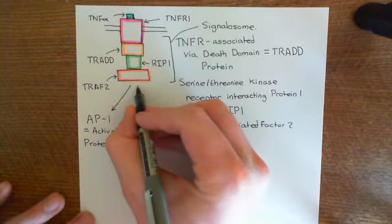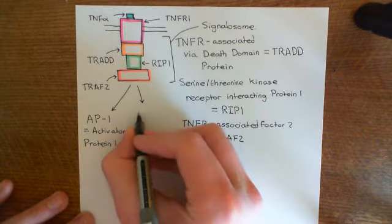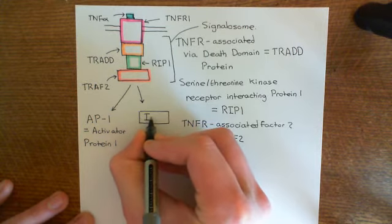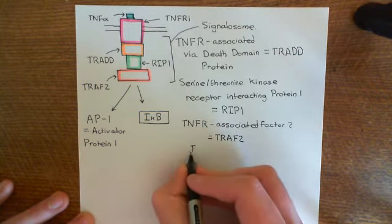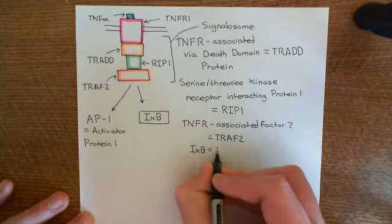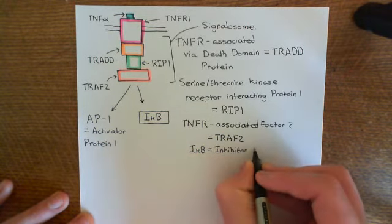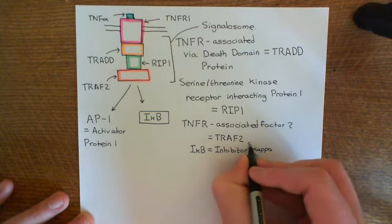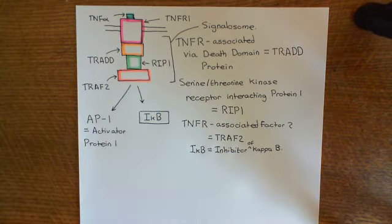NF-kappa-B is usually inhibited by the binding of another protein known as I-kappa-B, the inhibitor of kappa B. This protein normally inhibits the nuclear factor kappa B complex. We will continue in the next video by looking at the structure of NF-kappa-B and how it is activated by inactivating this inhibitor of kappa B.